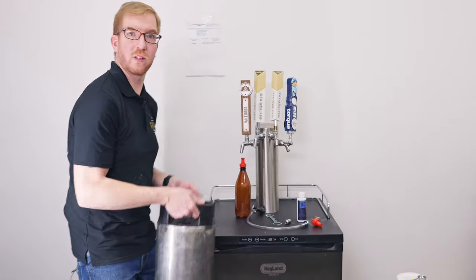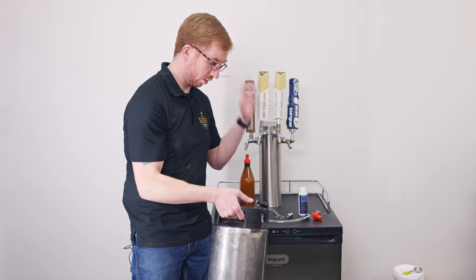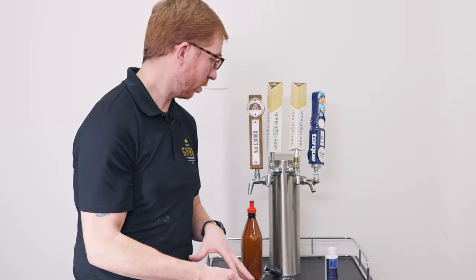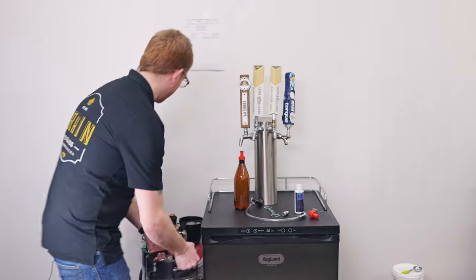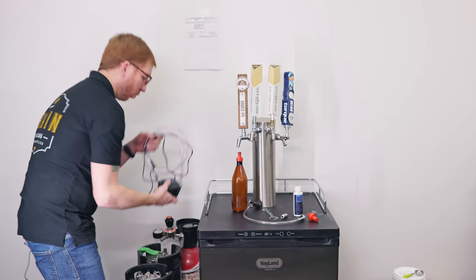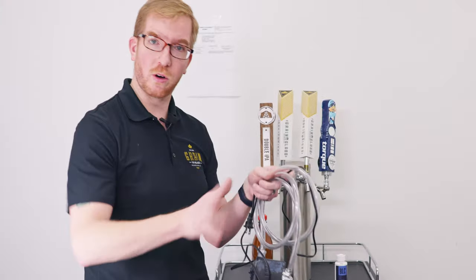The second way is just using a keg that you probably already have. Let's say you just drank all the beer in it, you're going to clean this keg anyway. You can use that to clean your beer lines. And then the way I like doing it, with a pump. So I'll show you all three methods.